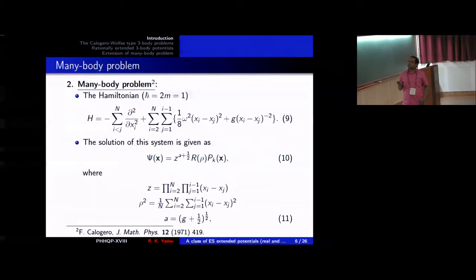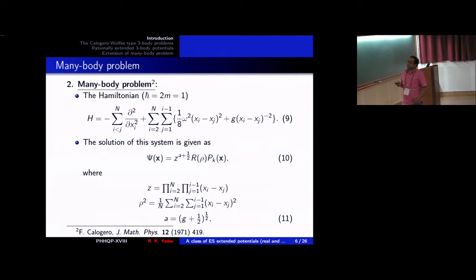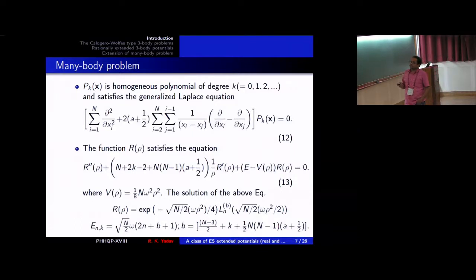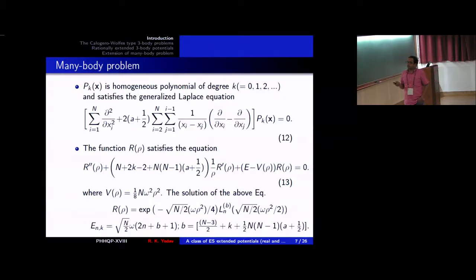Similarly, for the many-body case, this is the well-known Calogero model. The solution looks like this, where z is given by this equation, and P_k is a homogeneous polynomial satisfying the generalized Laplace equation. These are well-known results, so we only summarize them here. The radial function R(rho) satisfies a well-known solvable differential equation, and when we solve it, the solution takes the form of normal Laguerre polynomials. Our main aim is to get the rational extension of this equation.